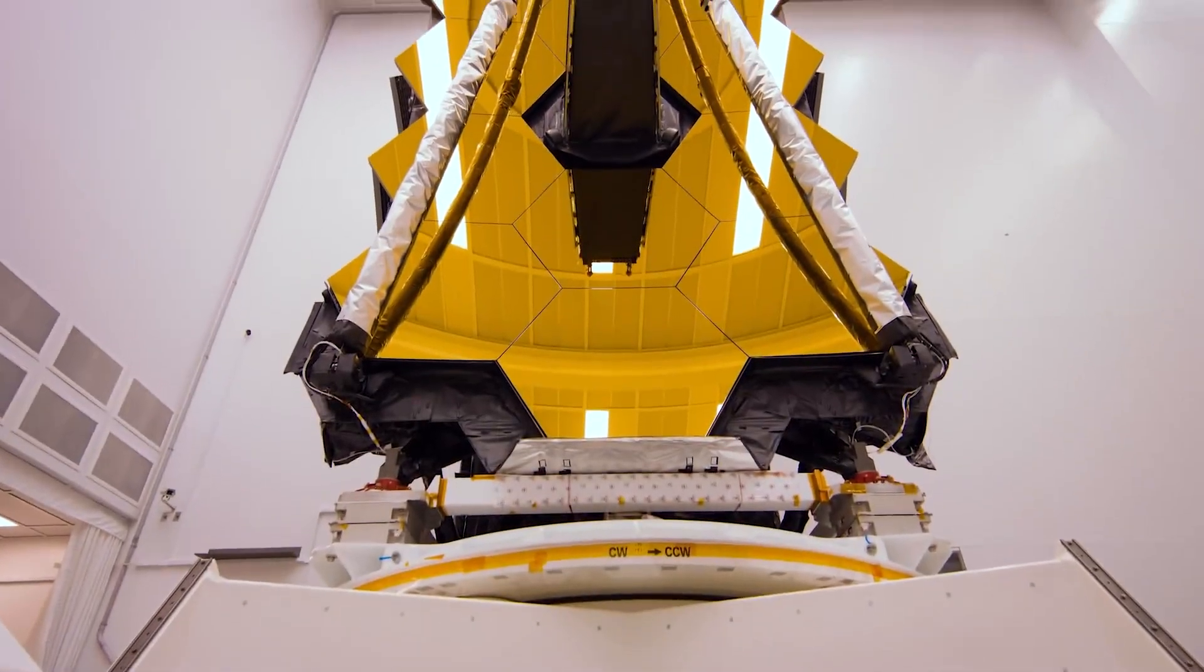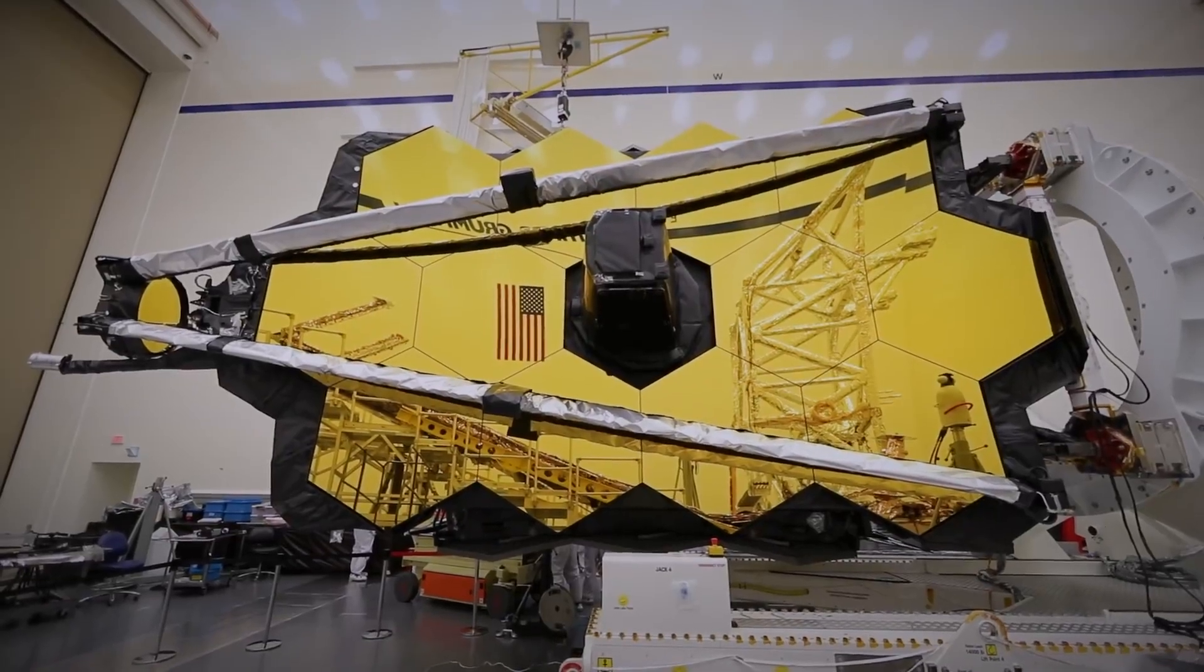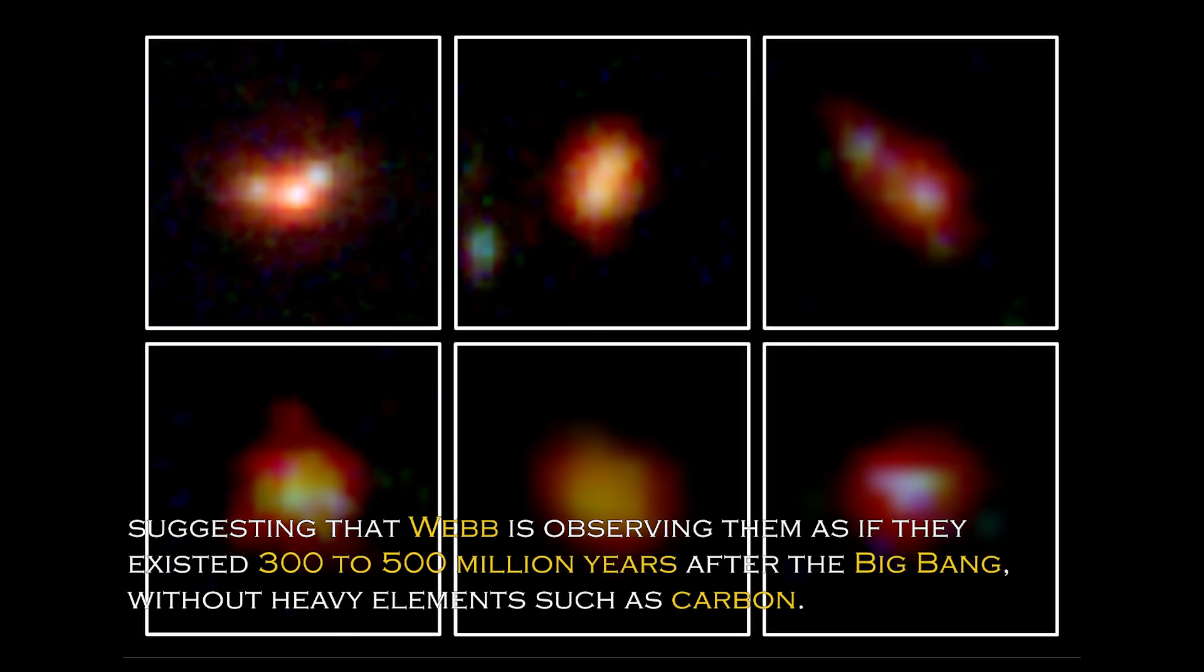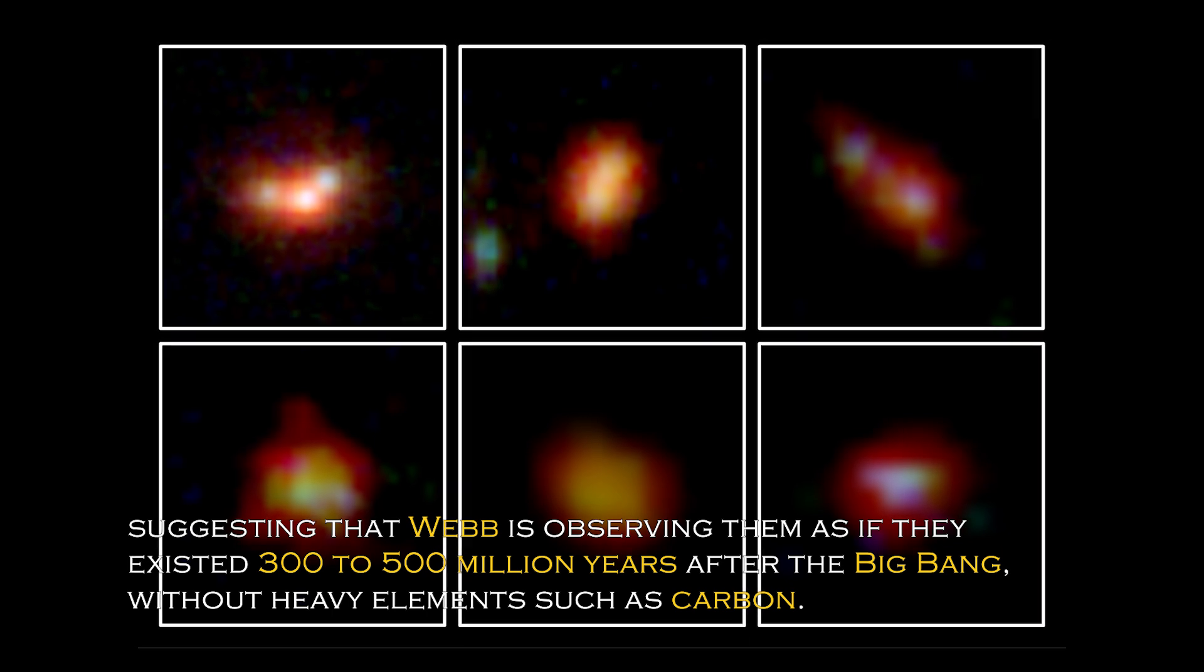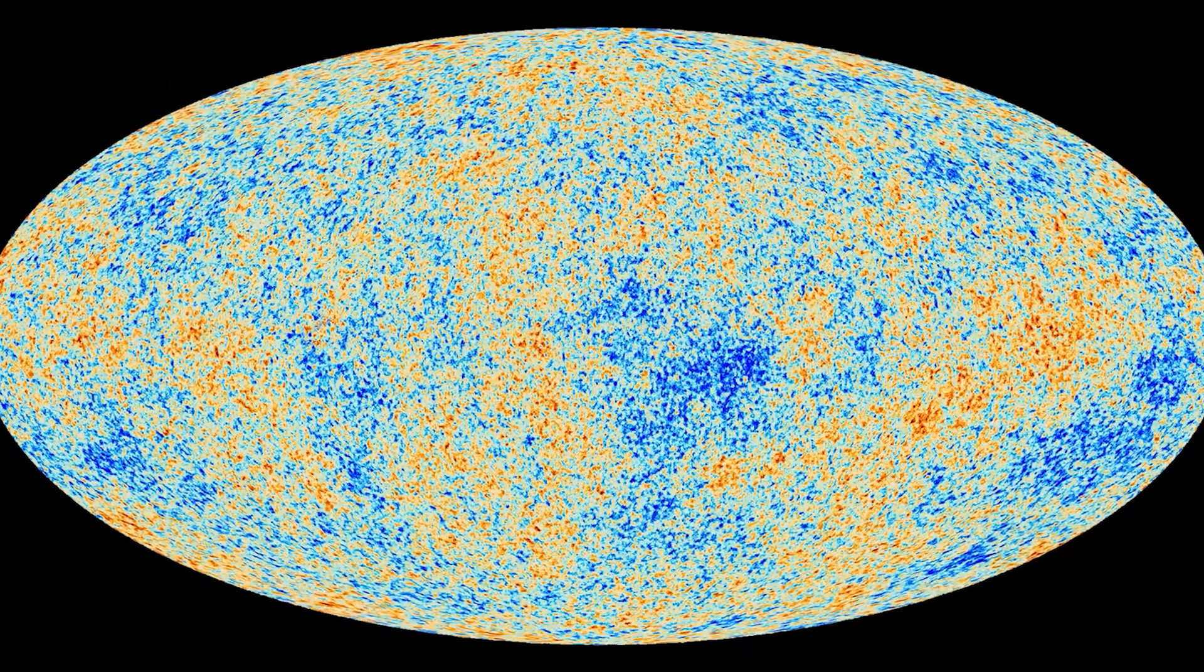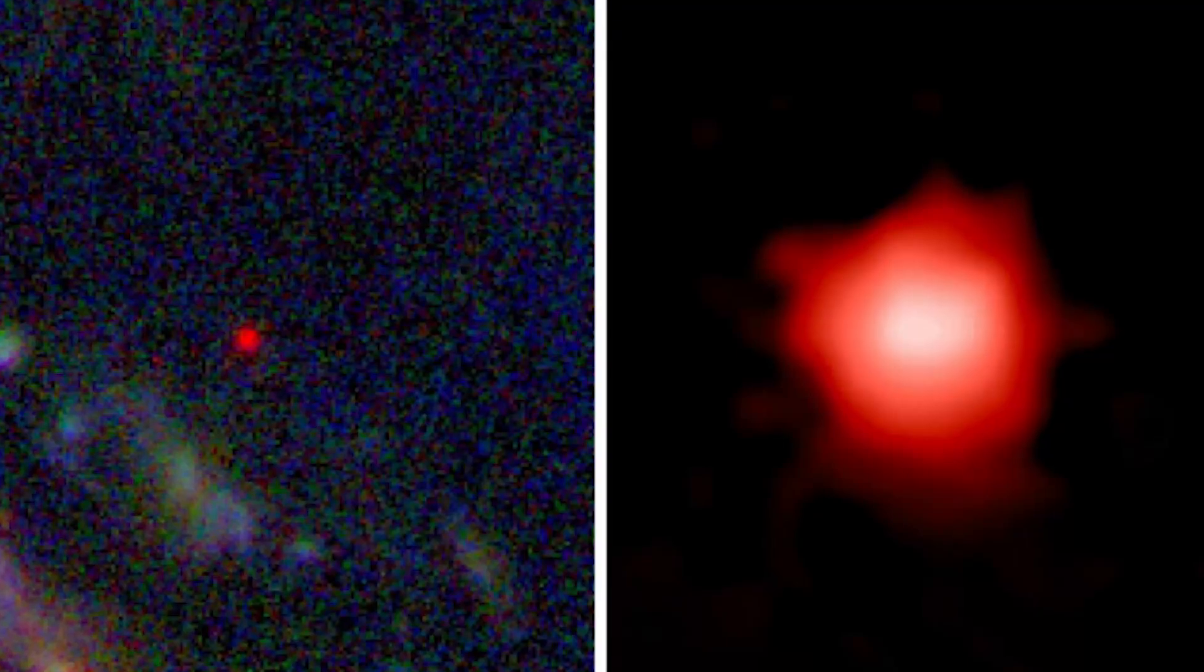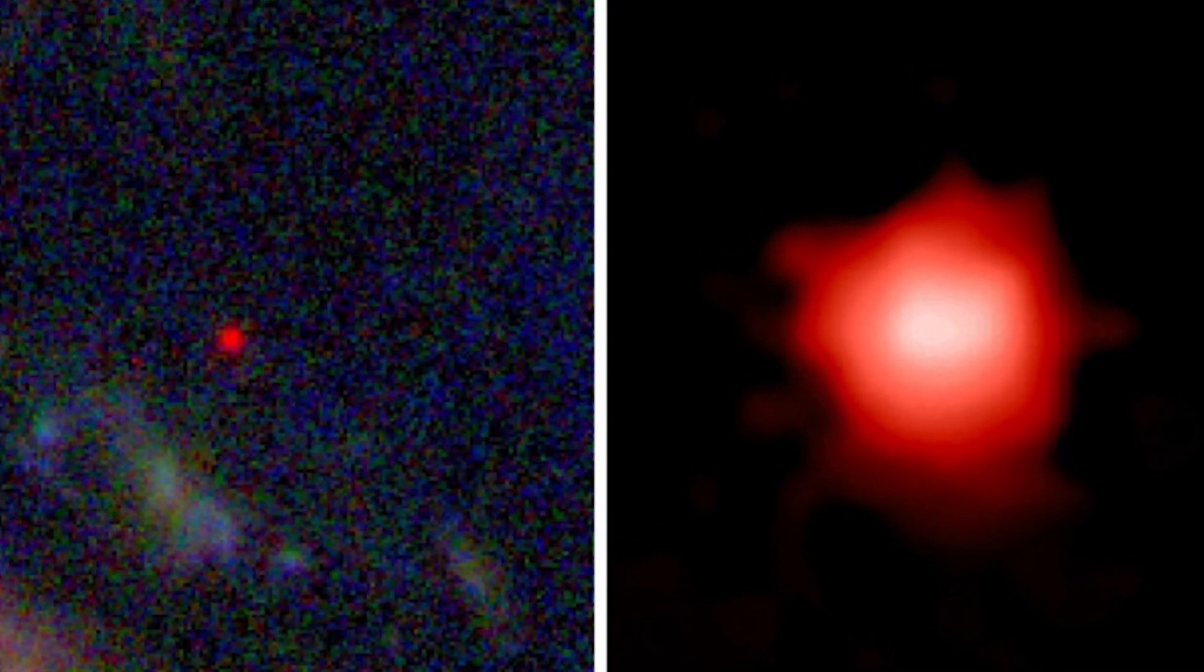Data obtained from Webb's spectrometer and near-infrared camera have revealed that four of the six primordial galaxies have extreme redshifts, suggesting that Webb is observing them as if they existed 300 to 500 million years after the Big Bang, without heavy elements such as carbon. This is surprising since the universe is estimated to be 13.8 billion years old, and the existence of these galaxies suggests that we need to revise our understanding of the early universe.